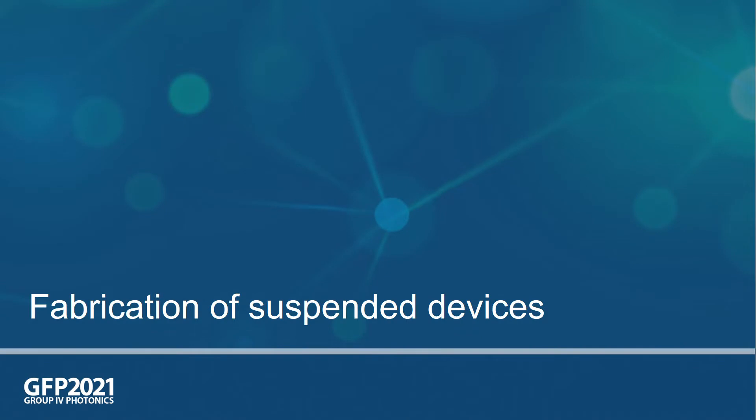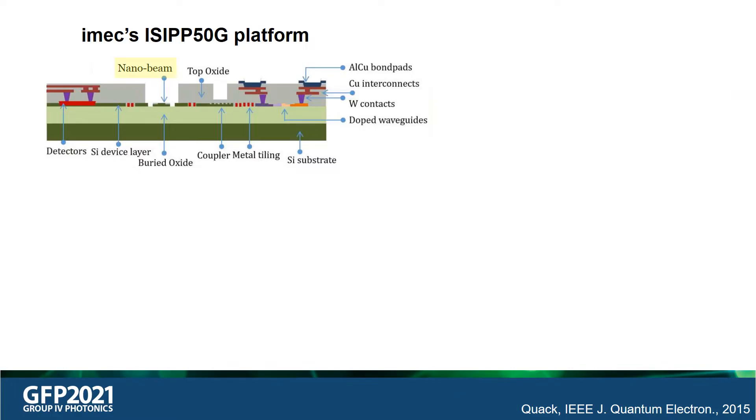Now, let's take a look at the fabrication steps involved in the release of MEMS devices on IMEC's ISIPP50G platform. A typical cross section of the platform is shown here. It contains passive components such as waveguides and grating couplers, as well as active components such as modulators and photodetectors. In this schematic, the nanobeam is highlighted. Note that the top oxide above the nanobeam has been removed.